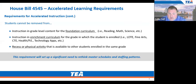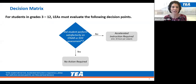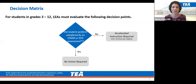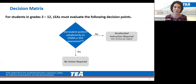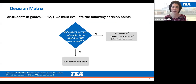Dr. Ruiz Mills will now talk about the accelerated committees and the decision matrix. The decision matrix shows whether a student needs to participate in accelerated instruction. The blue diamond asks: did the student perform satisfactorily on the STAAR or STAAR EOC assessment? Performing satisfactorily means the student performed at the approaches, meets, or masters level. If they didn't perform at those levels, they require accelerated instruction for 30 hours per subject. If they did perform satisfactorily, no action is required.